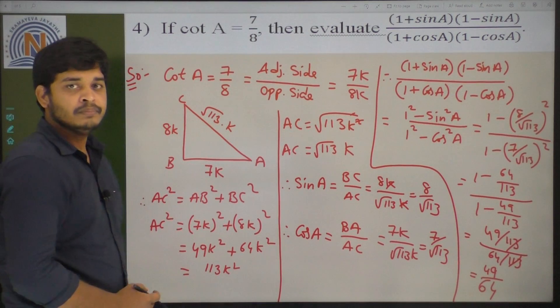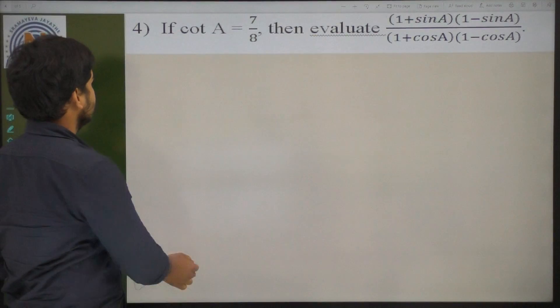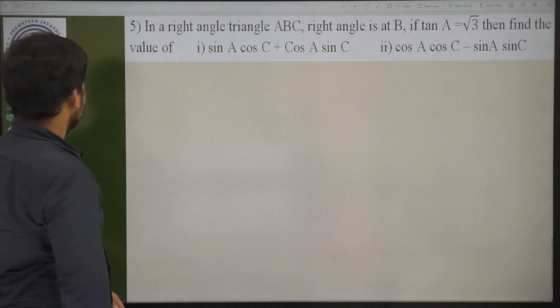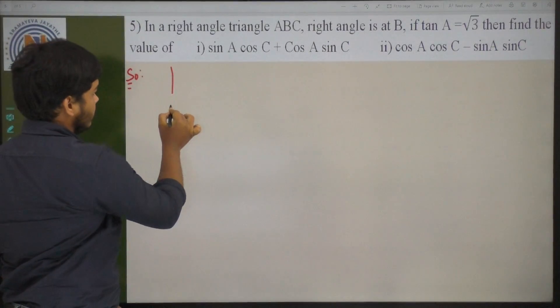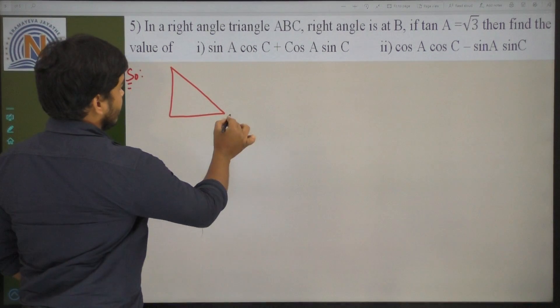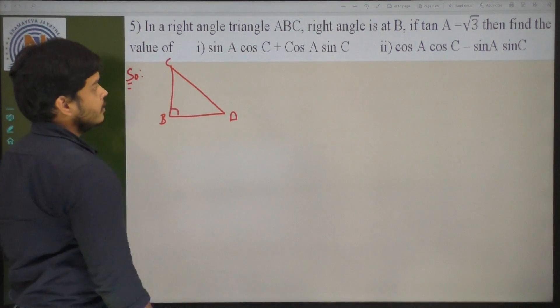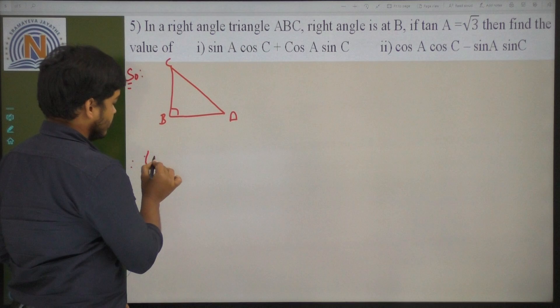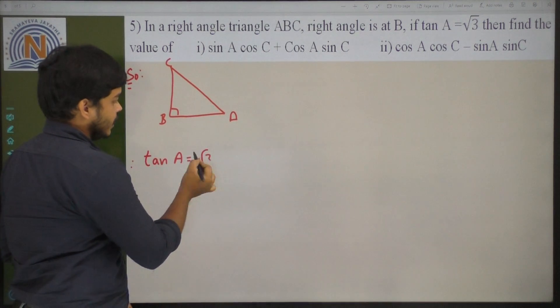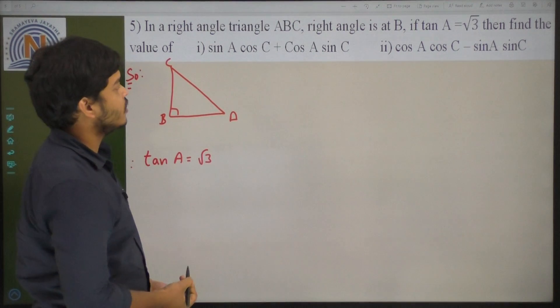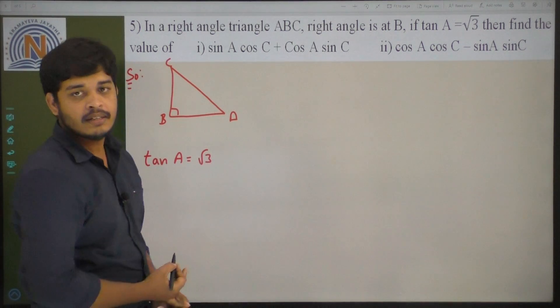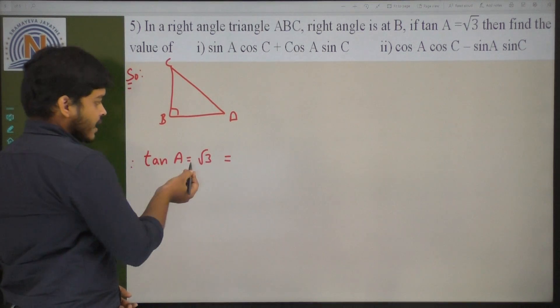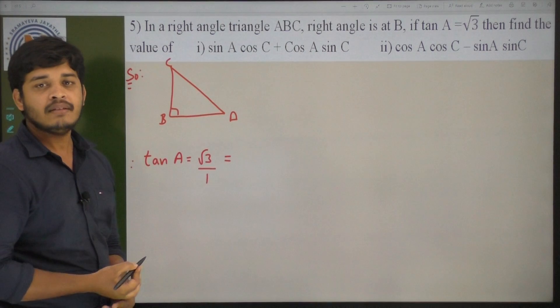Now coming to the next problem. In a right angle triangle ABC with right angle at B, if tan A is equal to root 3, then find the values of sin A cos C plus cos A sin C, and also cos A cos C minus sin A sin C. Tan A is given as root 3, taken as root 3 by 1. Tan A is opposite side by adjacent side — so opposite is root 3K and adjacent is 1K.